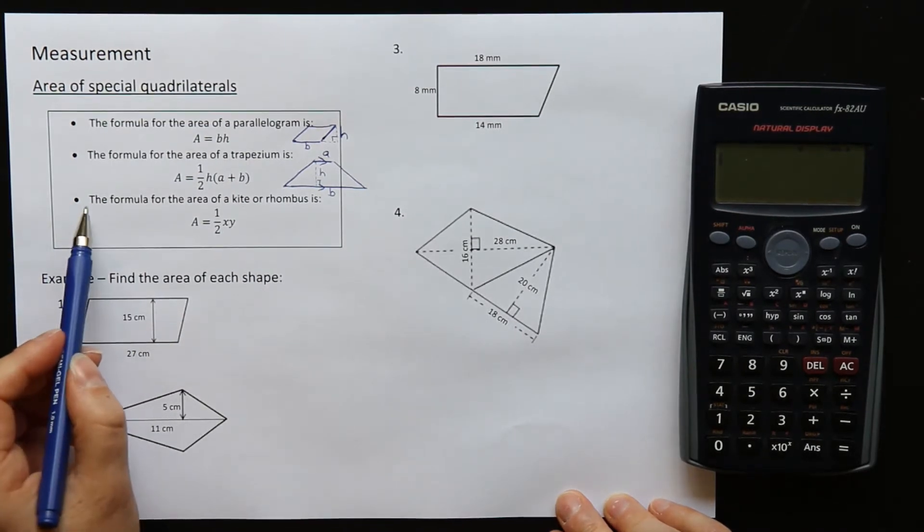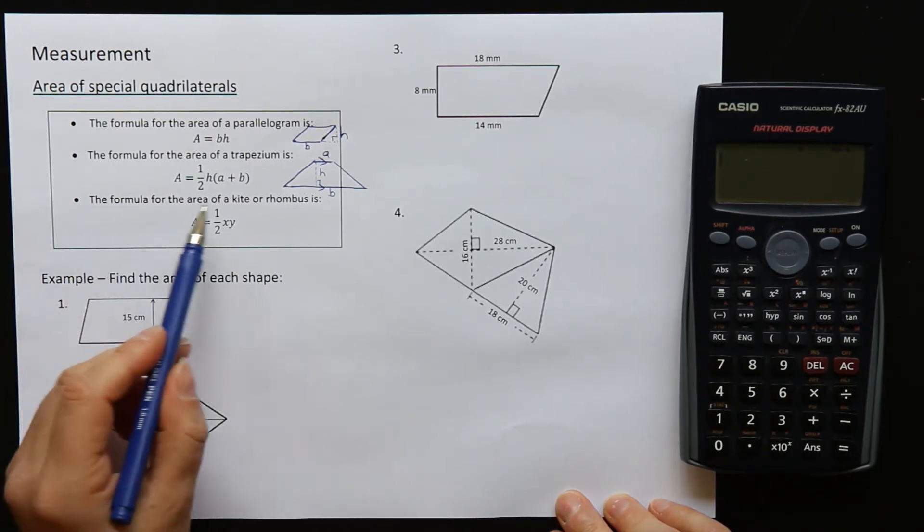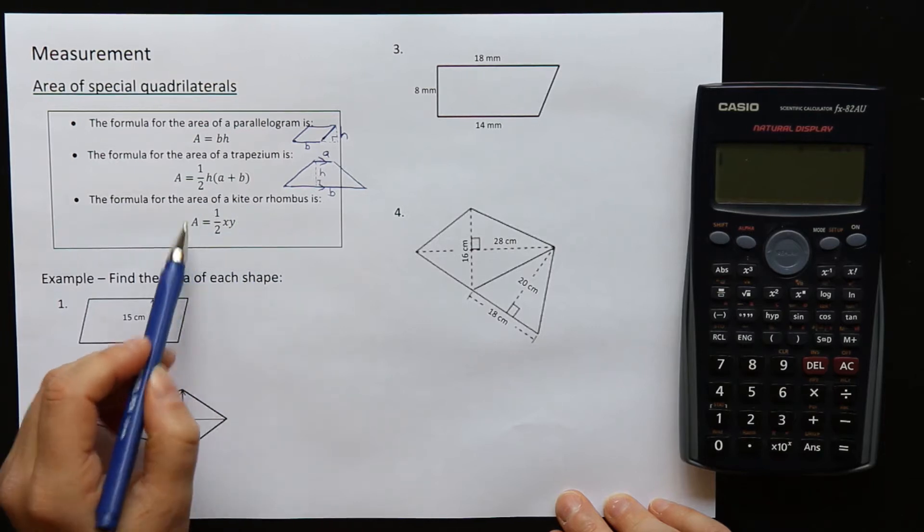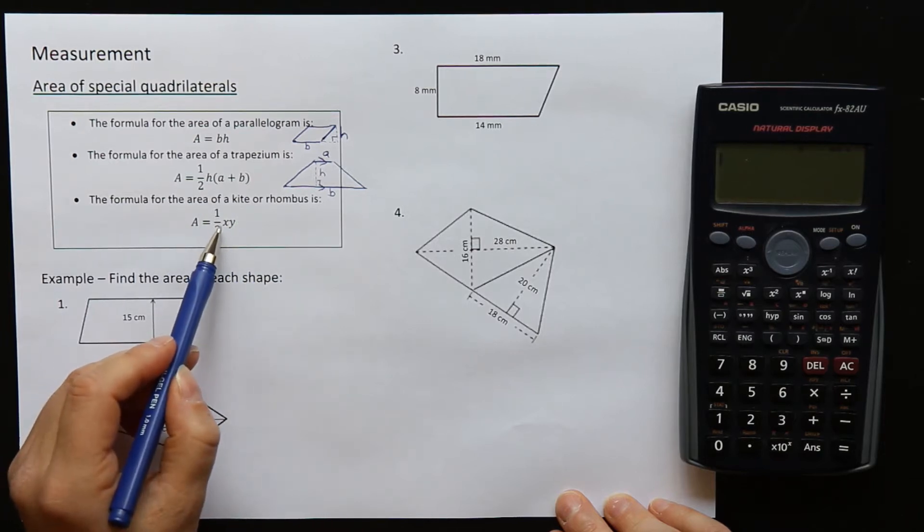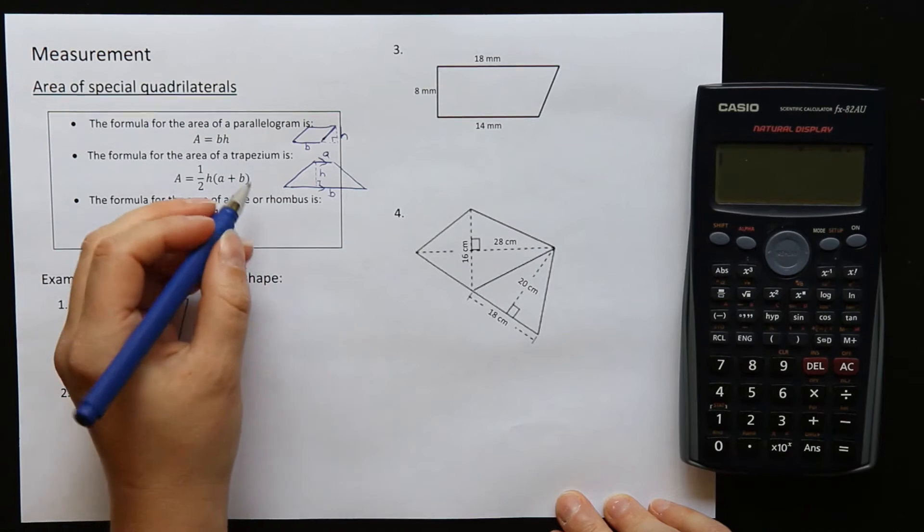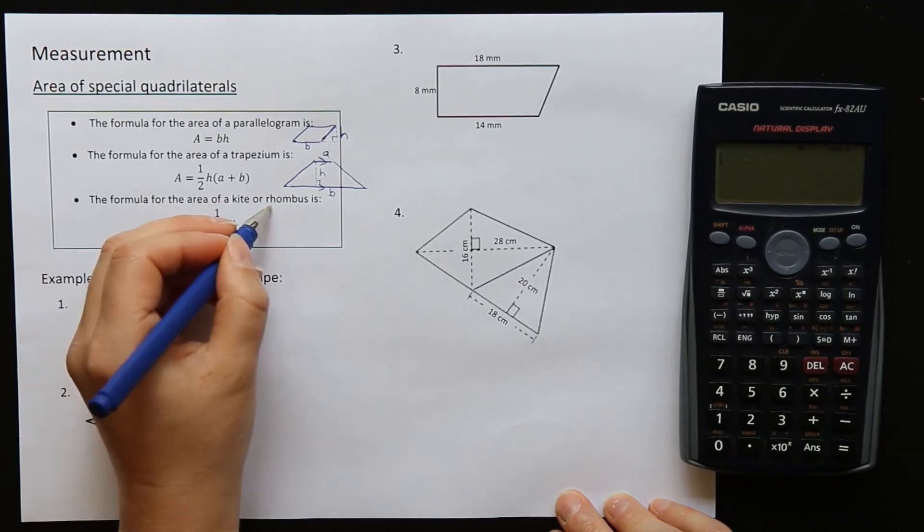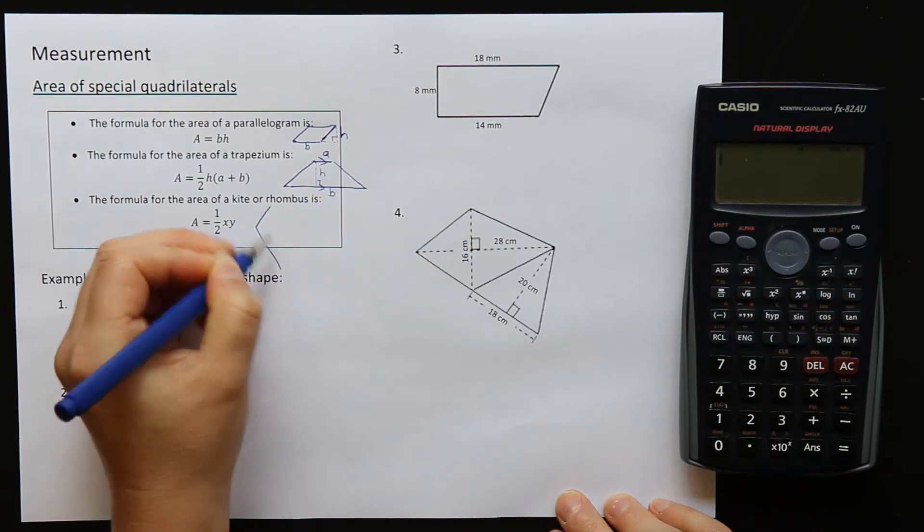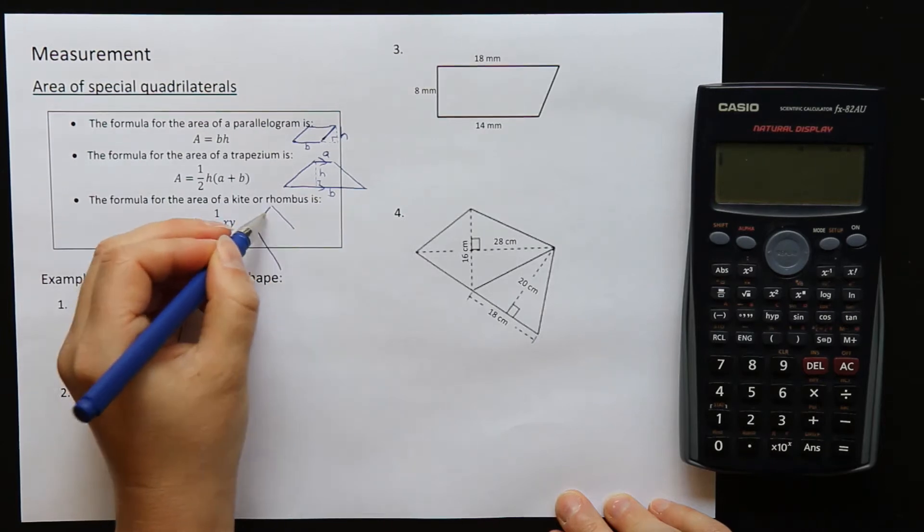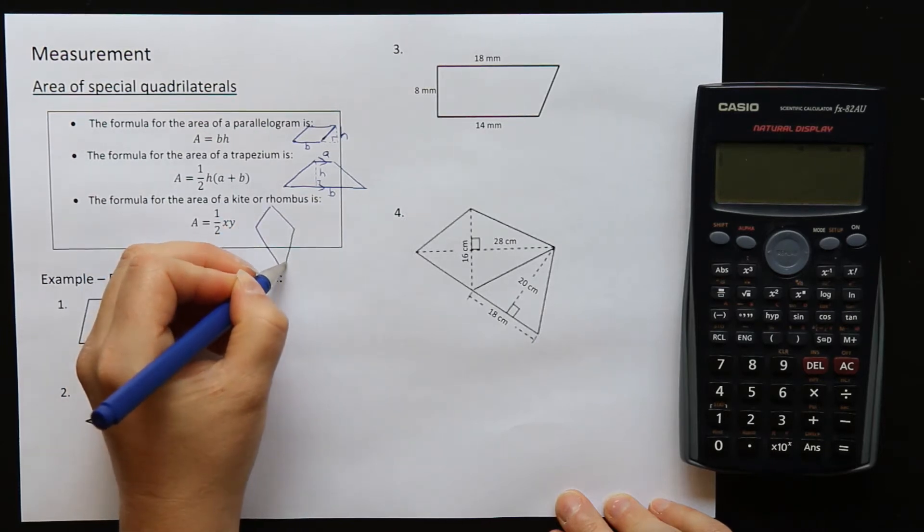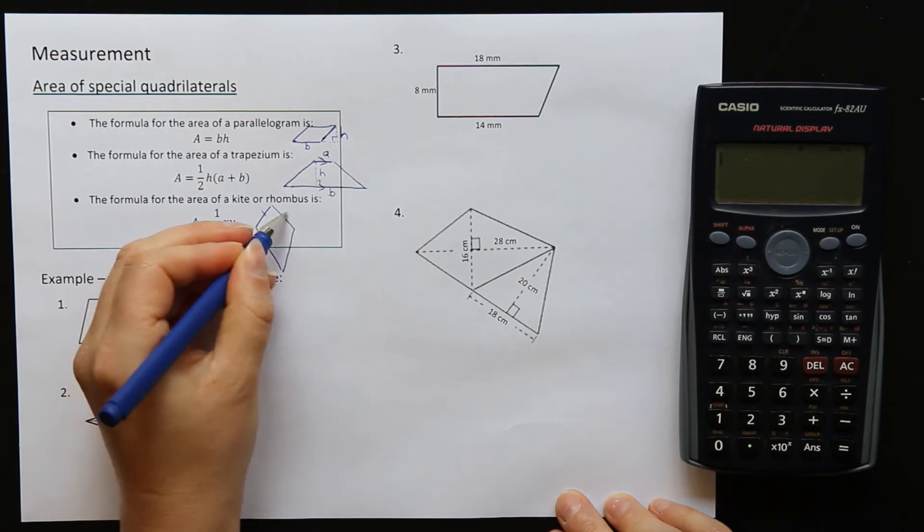And the third one here, the formula for a kite or rhombus is the same formula, A is equal to half XY. So a kite looks like this, where we have these top two sides the same and the bottom ones down here the same length. So that one and that one are equal, that one and that one are equal. That's a kite.